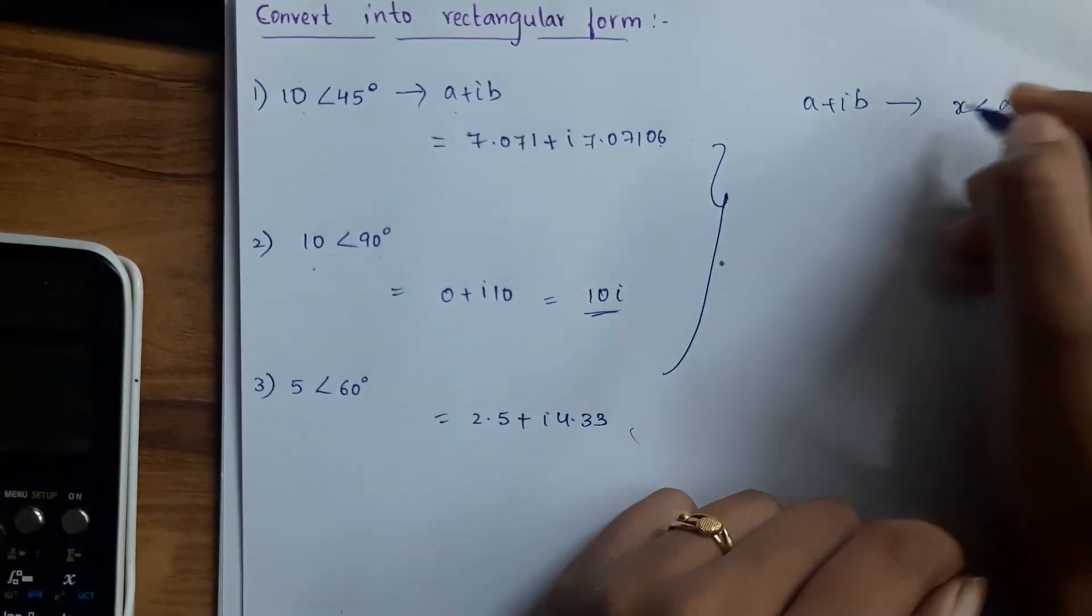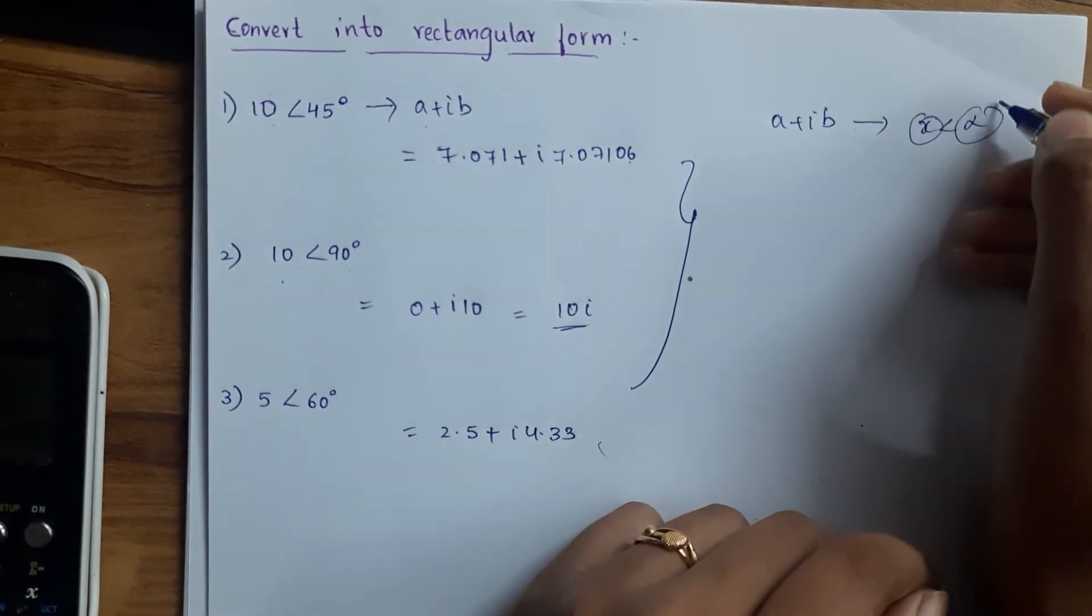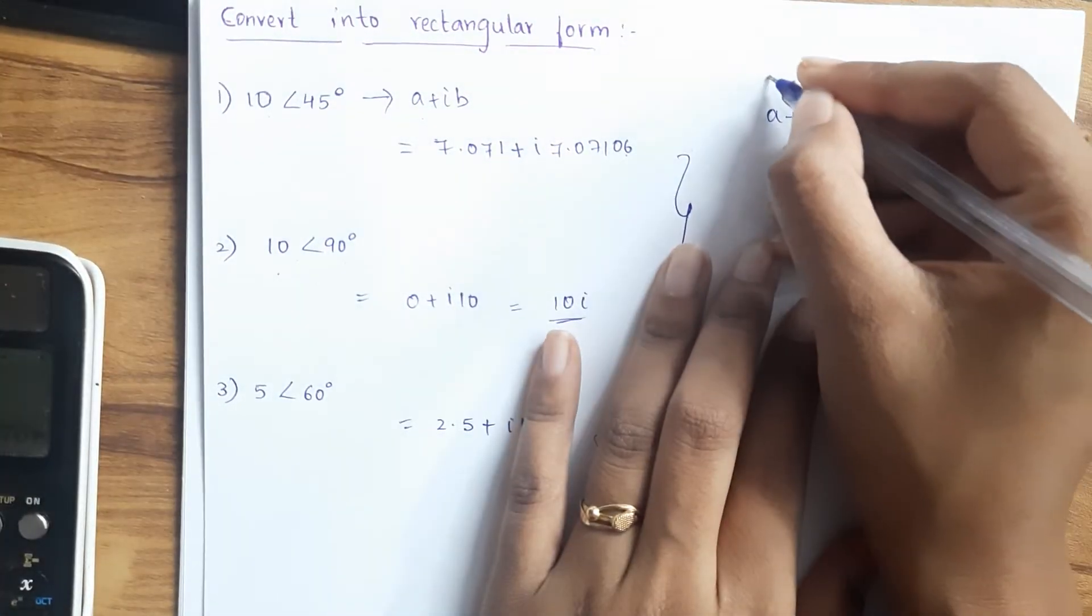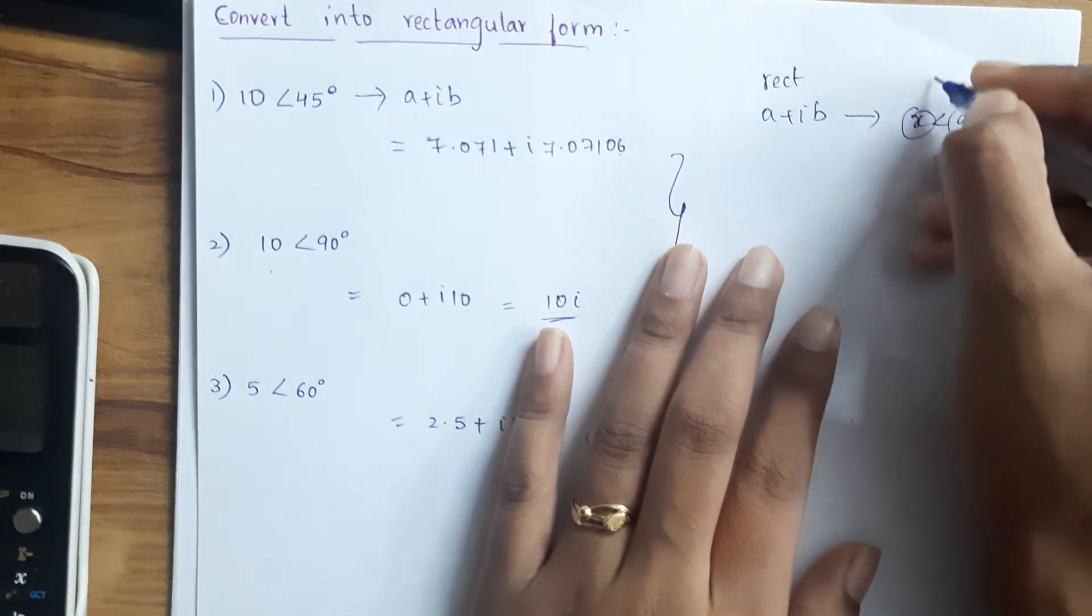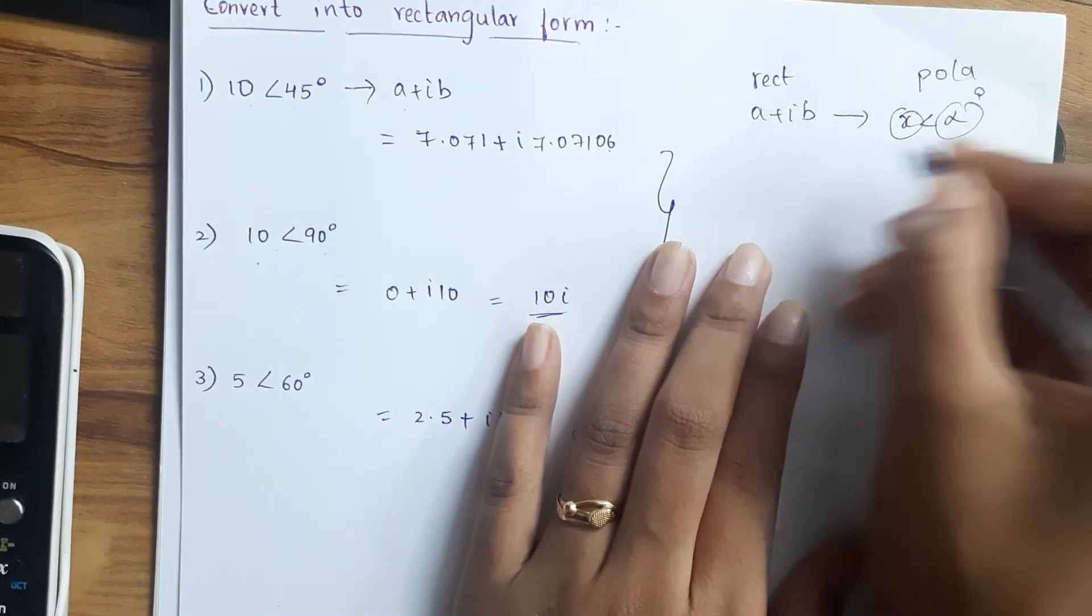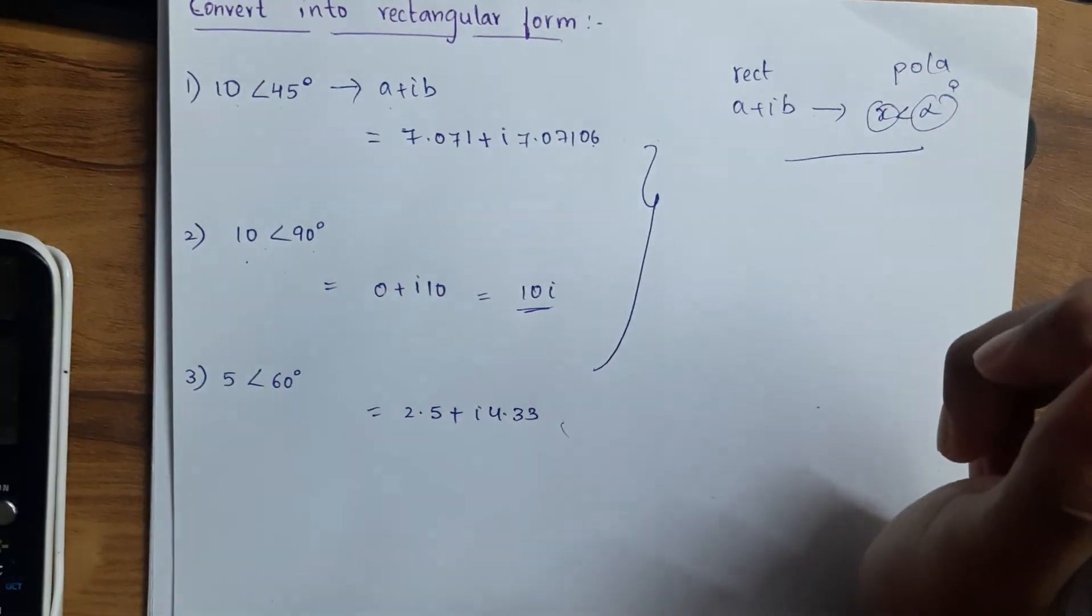So this is our rectangular form, this is our polar form. We will see how to convert next in the next video. Thank you so much.